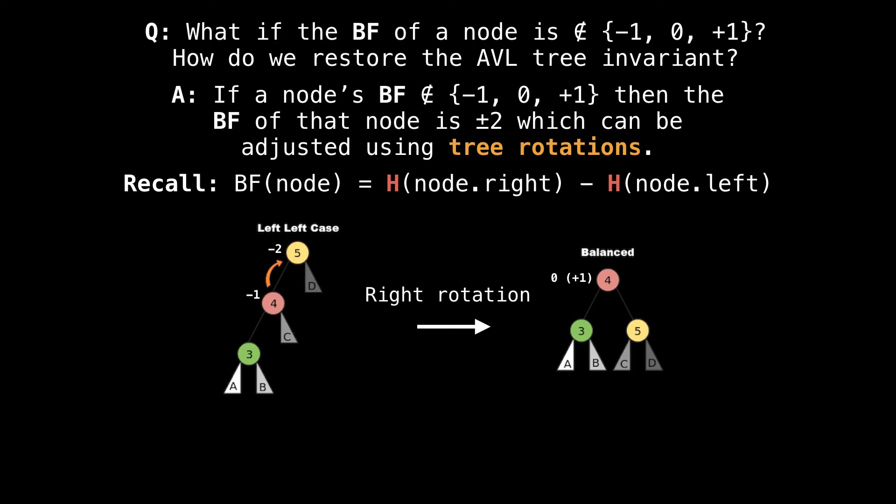So a slide or so back, I said that the balance factor of a node must always be minus one, zero, or plus one. A natural question to ask is, how do we handle the case where this is not true? The answer is that if this is not true, then the balance factor must either be plus two or minus two, which we can easily handle with tree rotations. The rotations we need to perform depending on the structure of the tree can be broken down into four distinct cases.